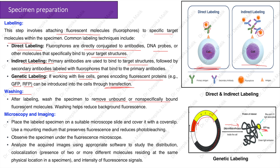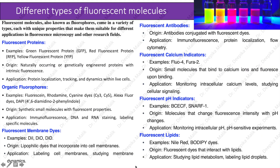Label washing: after labeling, wash the specimen to remove unbound or non-specifically bound fluorescent molecules. Washing helps reduce background fluorescence. For microscopy and imaging, place the labeled specimen on a suitable microscope slide and cover it with a coverslip. Use a mounting medium that preserves fluorescence and reduces photobleaching. Analyze the acquired images using appropriate software to study the distribution, co-localization, and intensity of fluorescence signals.